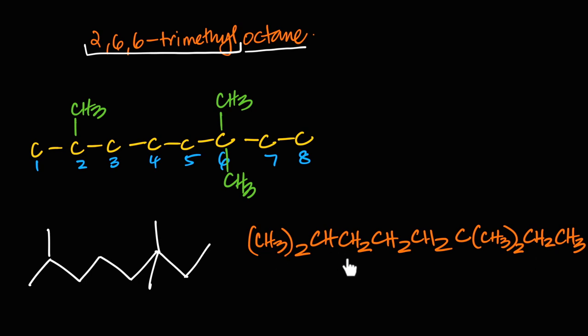Sometimes when you have repeating CH2 groups you can use parentheses — for example, written as (CH3)2CH(CH2)3C(CH3)2CH2CH3. We worked through this larger molecule so you understand how to write all three types of formulae — structural, skeletal, and condensed — and how to determine the structure from the name.